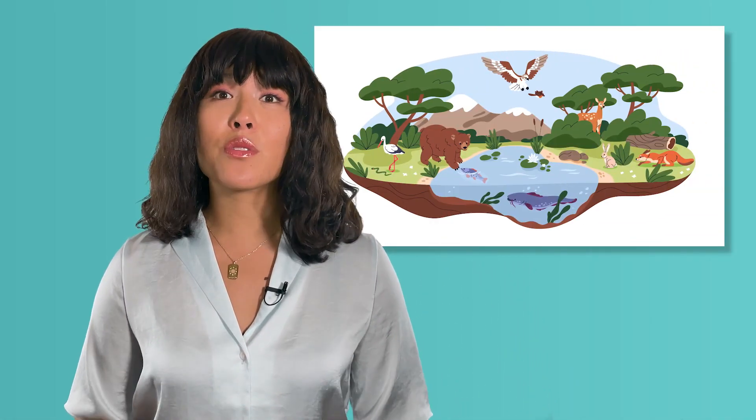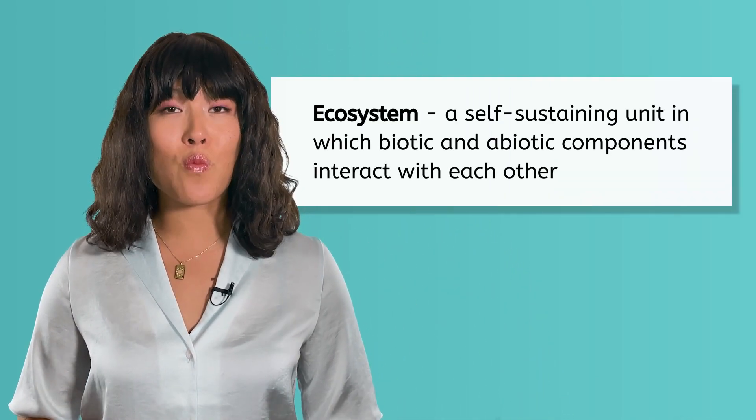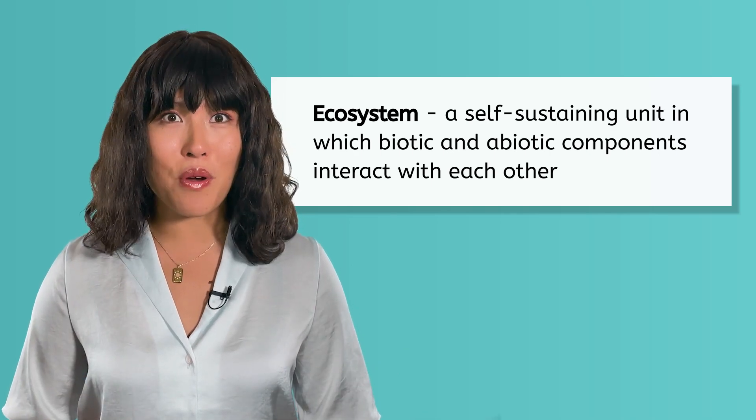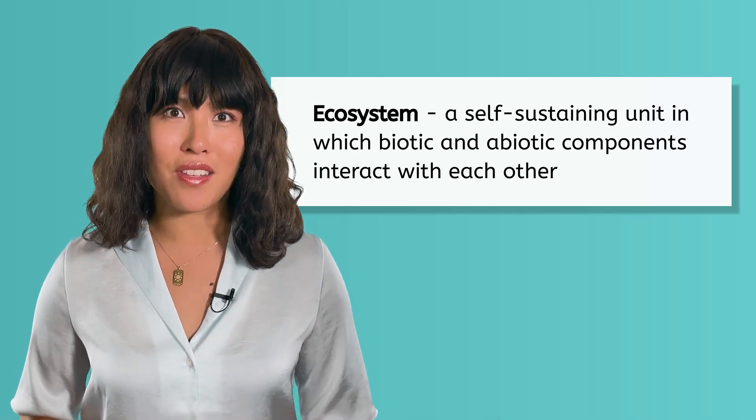Looking at this example of an ecosystem from our last lesson, I want you to pause the video and record your own definition of an ecosystem. From our previous lesson, you may define an ecosystem as the biotic and abiotic factors in an environment, and that is really close to the correct definition. An ecosystem is a self-sustaining unit in which biotic and abiotic components interact with each other.